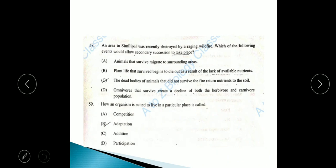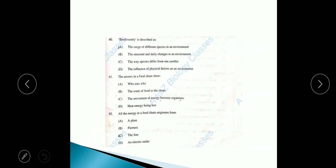Question 58: An area in Similipal was recently destroyed by a raging wildfire. Which of the following events would allow secondary succession to take place? The answer is option C, the dead bodies of animals that did not survive in the fire returned nutrients to the soil. Question 59: How an organism is suited to live in a particular place is called adaptation.